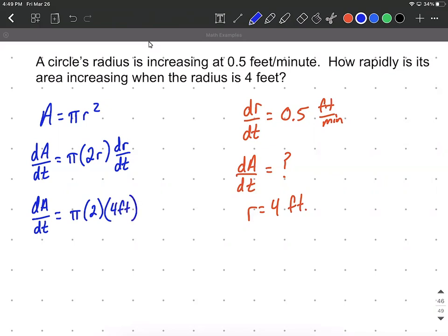And then finally, where we have dr/dt, we were given that was 0.5 feet per minute, so substituting that in as well.